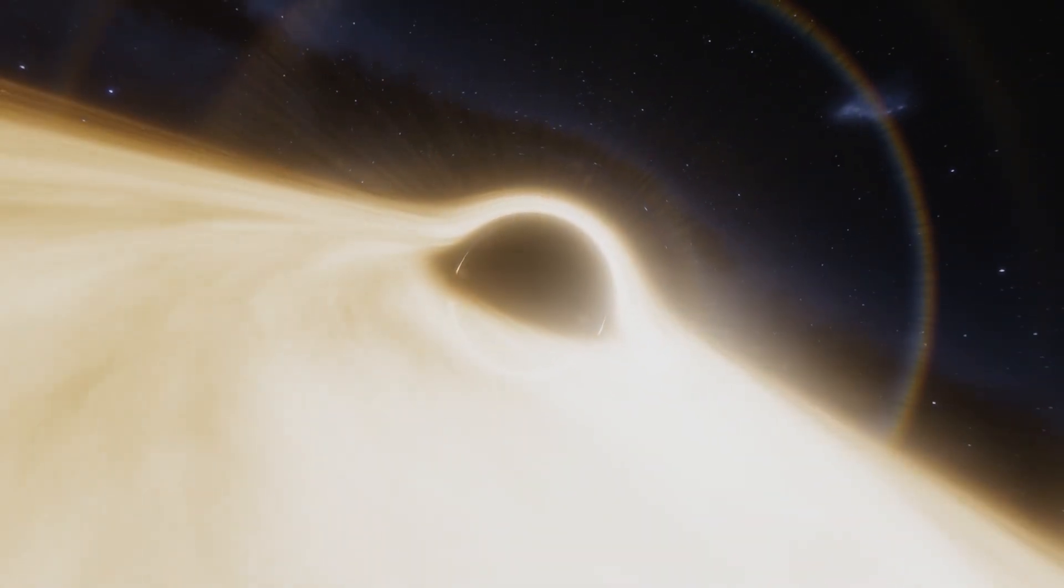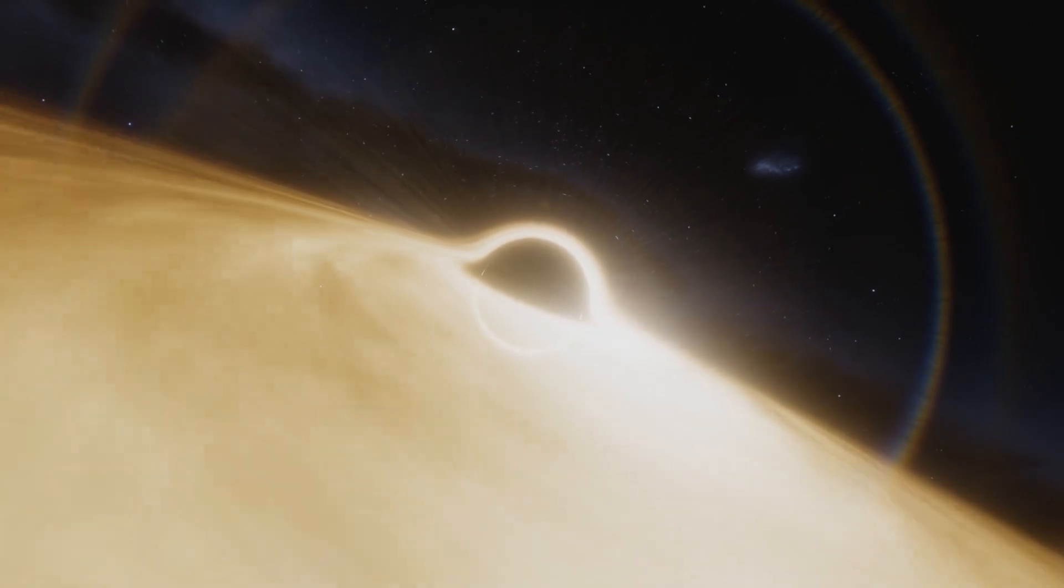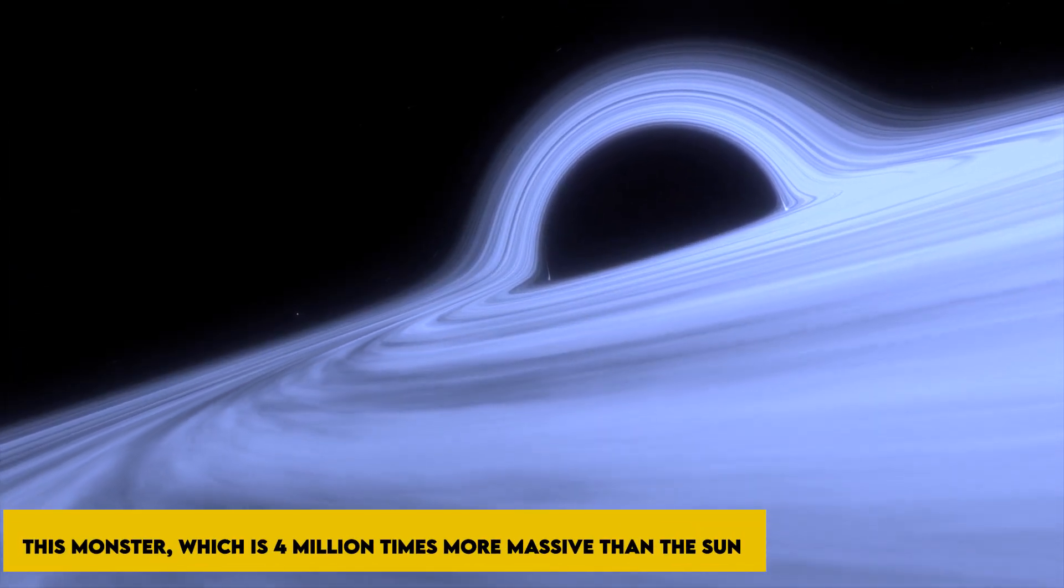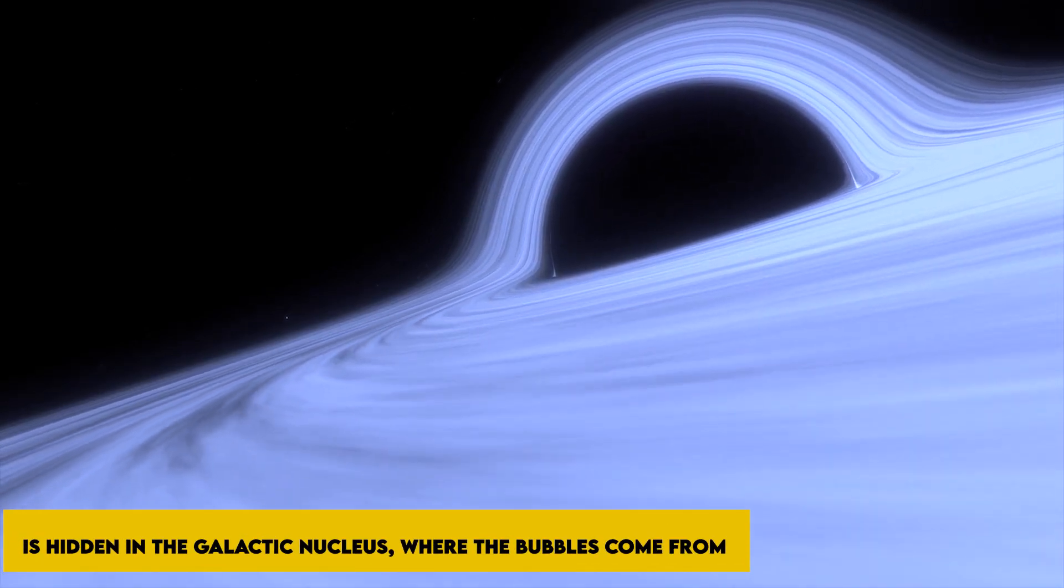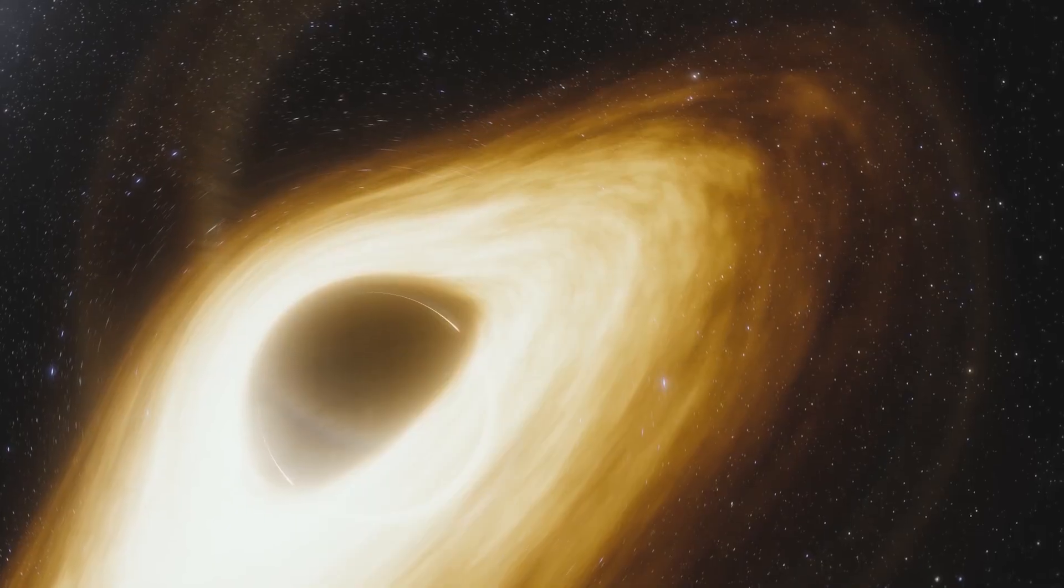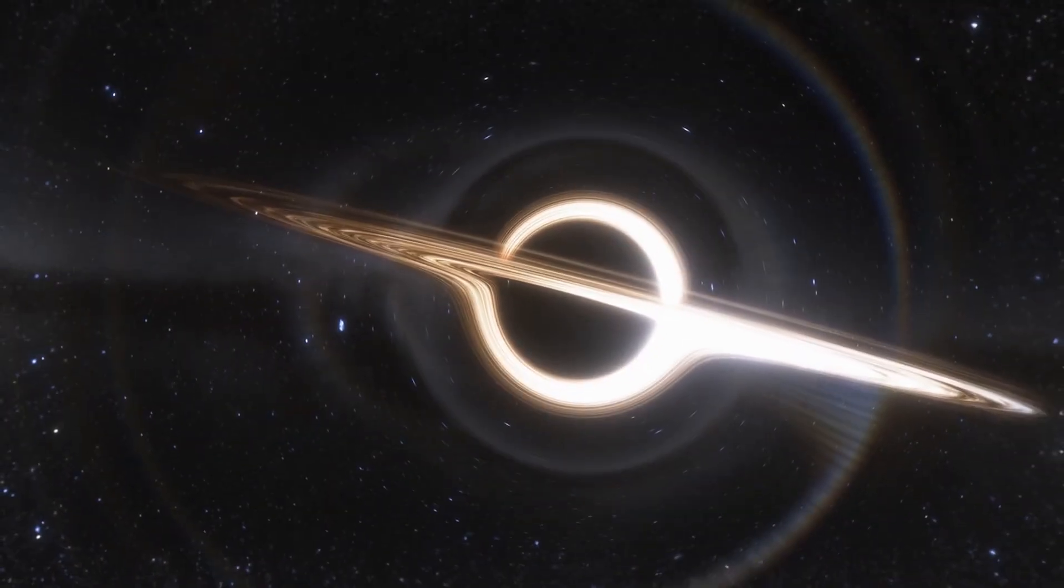The supermassive black hole that lurks in the galaxy is a leading candidate as the cause of the bubbles, Musk stated. This monster, which is four million times more massive than the sun, is hidden in the galactic nucleus where the bubbles come from. Such enormous black holes are typically found in the centers of galaxies. Some of these black holes are actually actively consuming matter. Having been fed, they simultaneously release enormous outflowing jets that may be seen over the electromagnetic spectrum.